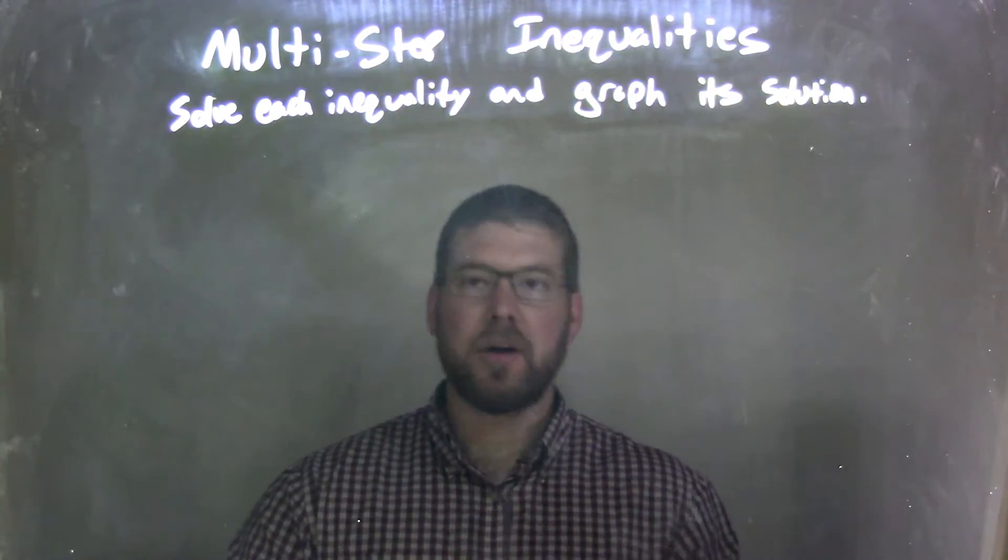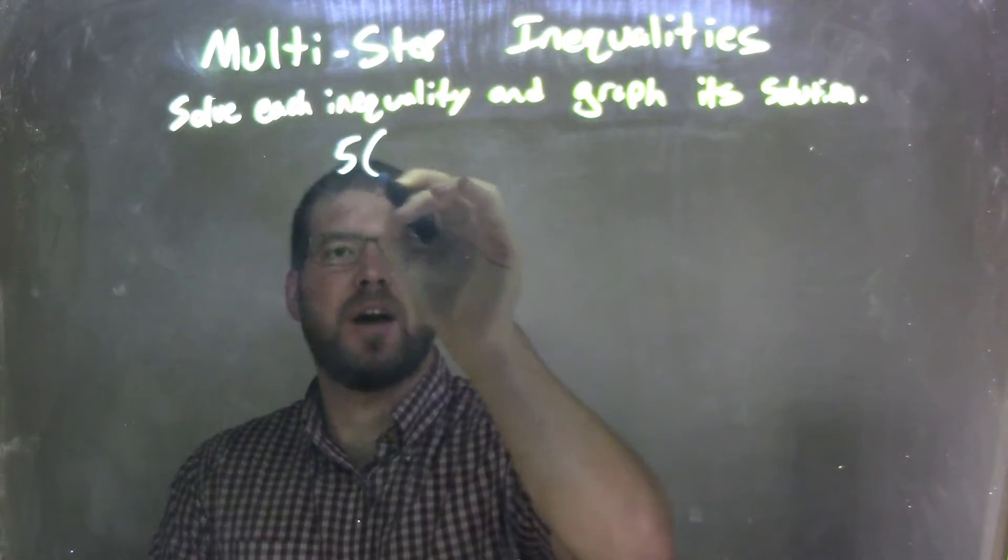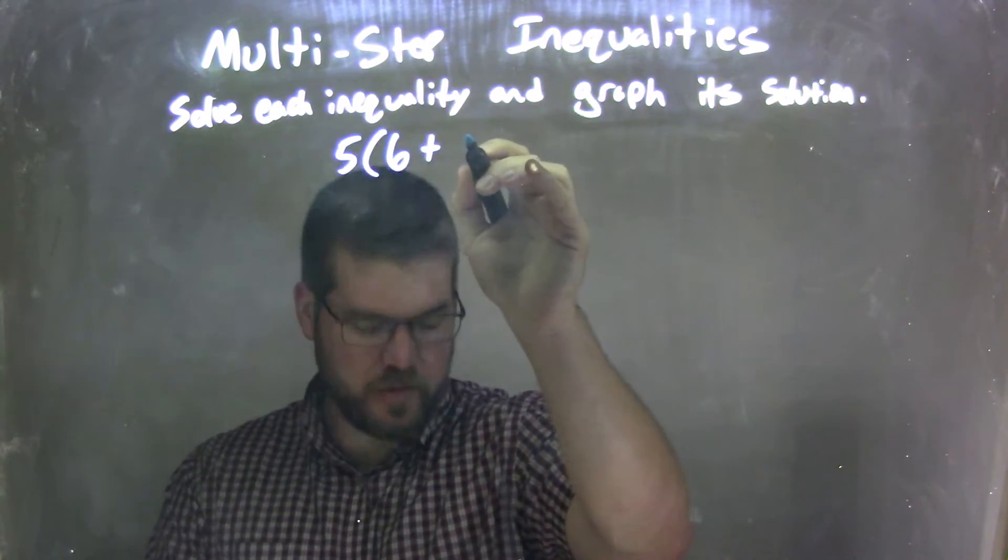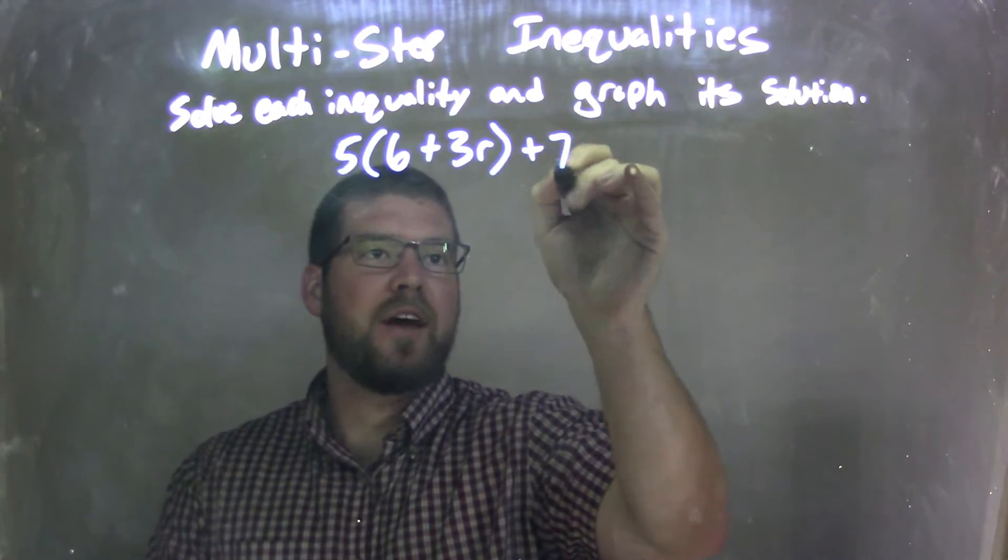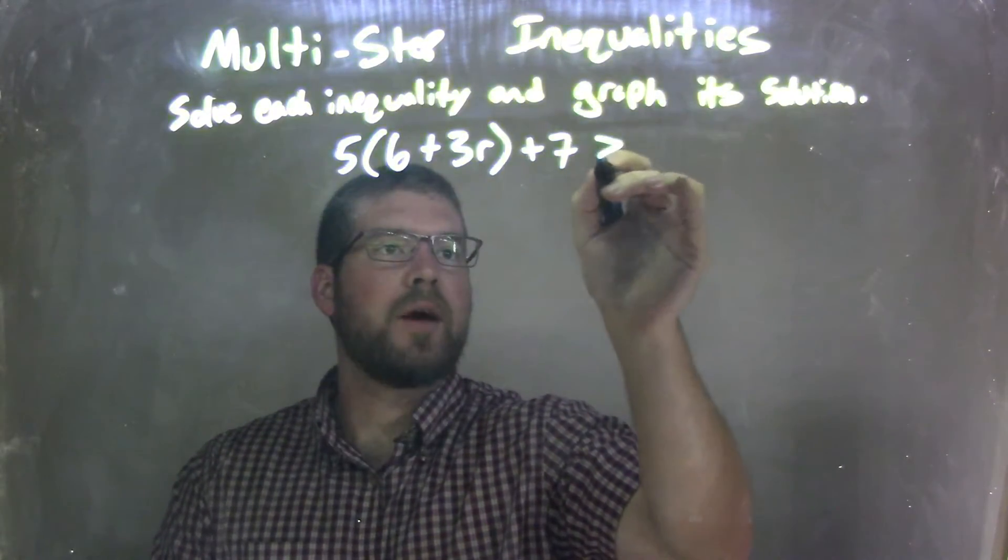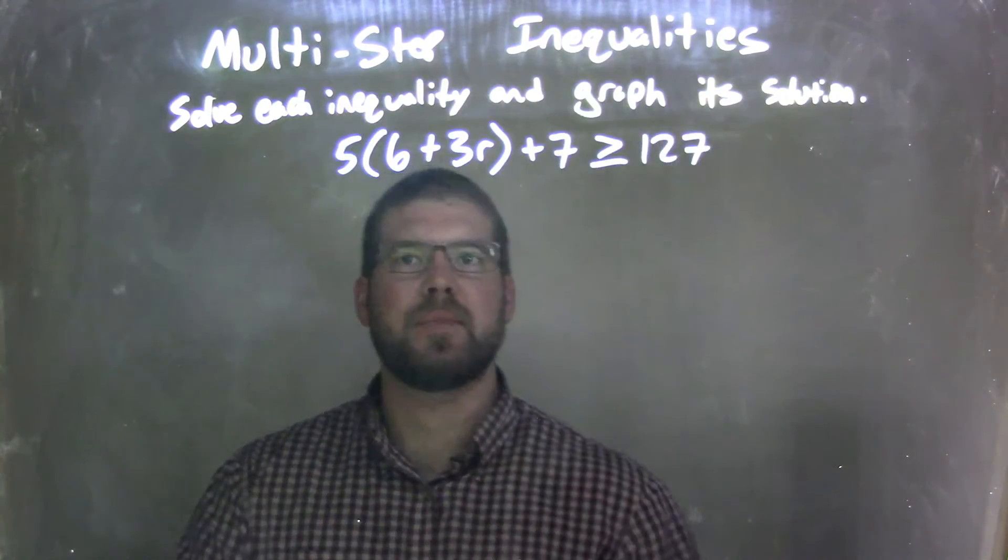So if I was given this inequality: 5 times parenthesis 6 plus 3R, parenthesis, plus 7 is greater than or equal to 127.